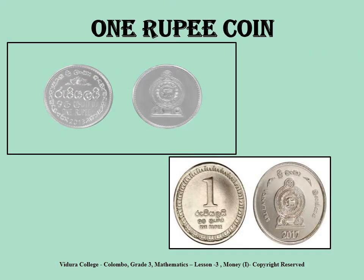Alright children, what is this coin? It is the one rupee coin. As you can see on the head's side, you will see the national emblem. And on the tail's side, you will see the value of the coin.